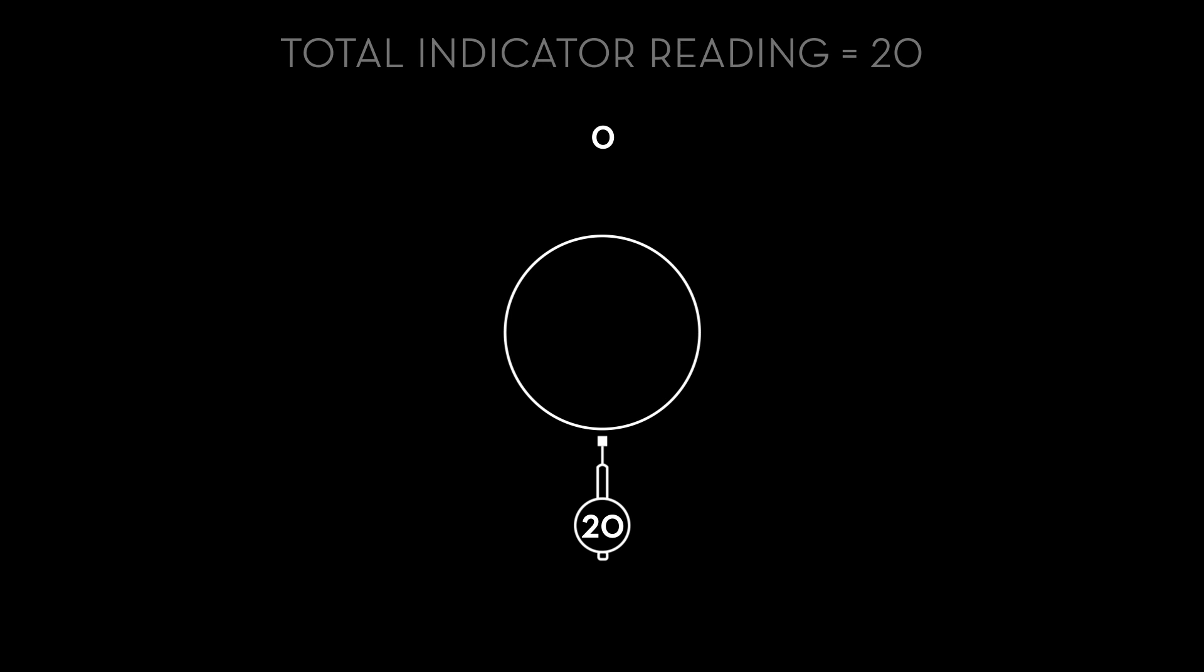Our total indicator reading is 20 thousandths, or mils. So our actual vertical offset is half of that, 10 mils. But this measurement method can be problematic if you have an obstruction at 6 o'clock that limits rotation.